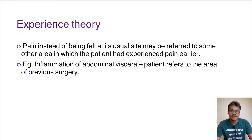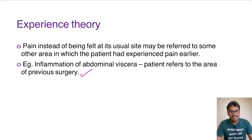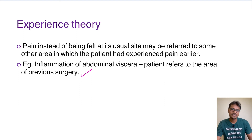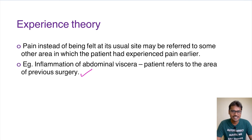Coming to the experience theory — this is not a very popular theory. The patient may relate the pain to some previous experience. Classical examples are: there is inflammation of the abdominal viscera, and the patient refers it to a previous surgical scar like an appendicitis scar. Another classical example is women who have undergone spinal anesthesia during pregnancy — whatever back pain they have later is usually attributed to the spinal anesthesia given long before, maybe 10 years prior, even long after the surgery is done.